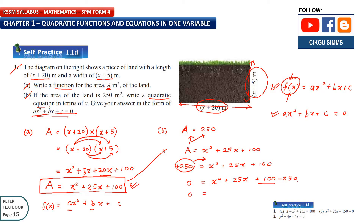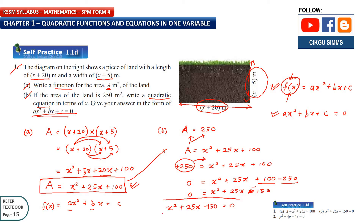Solving the constants: 100 minus 250 gives minus 150. So the whole equation on the left side equals zero. The quadratic equation is x² + 25x − 150 = 0. That is your equation for part B.